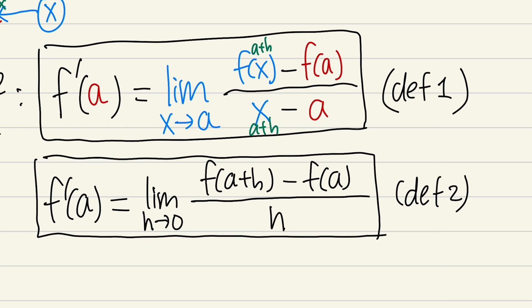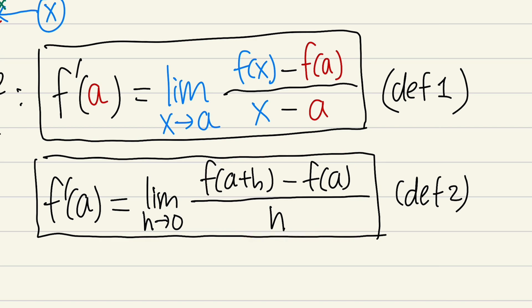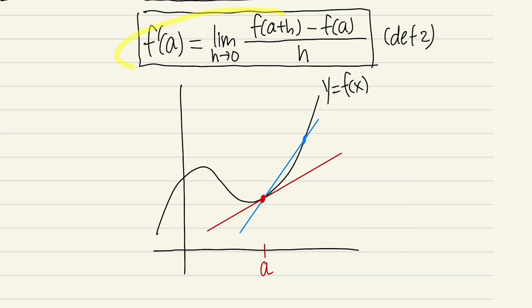Remember that this kind of limit always gives you 0 over 0. If you put a into Definition 1, the top gives f of a minus f of a which is 0, and the bottom is also 0. In Definition 2, for that same 0 over 0 form, h must be approaching 0 — because when h equals 0 the top gives f of a minus f of a equals 0 and the bottom is also 0.